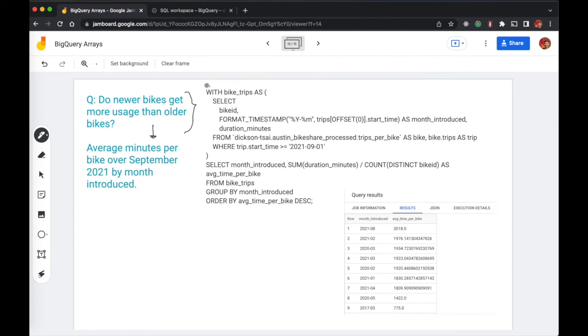So a way we can formulate this question is we can ask what is the average amount of time per bike over September 2021 based on the month introduced for the bike. So I got September 2021 from the most recent trips in this data set. And then we're going to reuse the month introduced part from the last slide in this query. And so you can use the with clause to break up your query into multiple parts. So let's just get all the trips first that were from after the start of September. So we need the bike ID to compute the average per bike. We're going to get the month introduced. We're going to get the minutes from bike unnested with trips because we want to associate each trip with its bike. And so that's where the cross join comes in. Now that we have this intermediate table, we can then select the month introduced, which will be our group. We're going to sum all the minutes divided by the number of distinct bikes in that group.